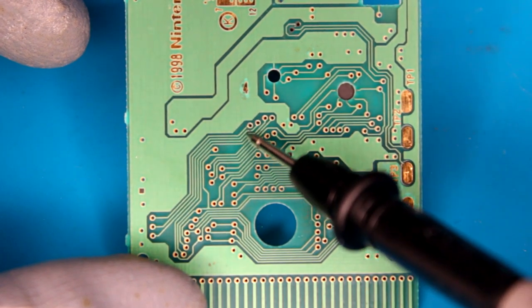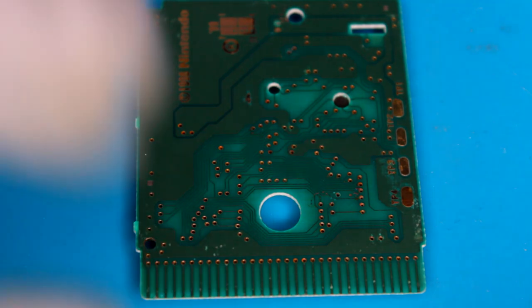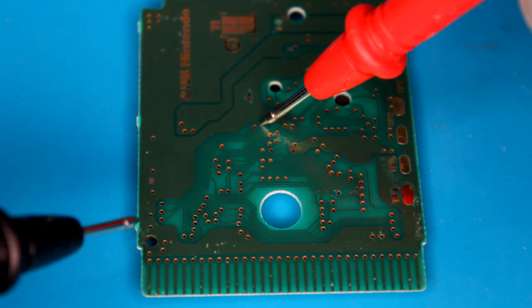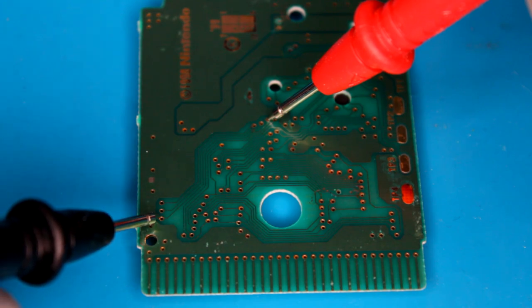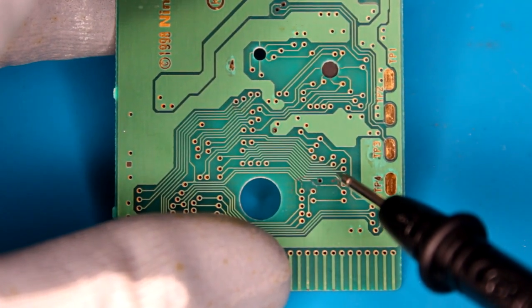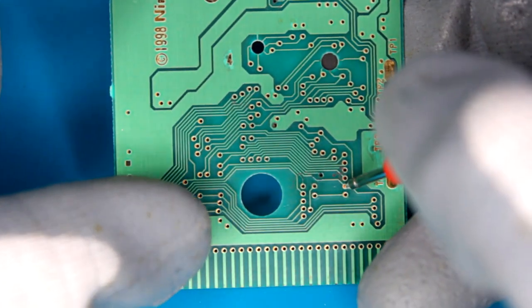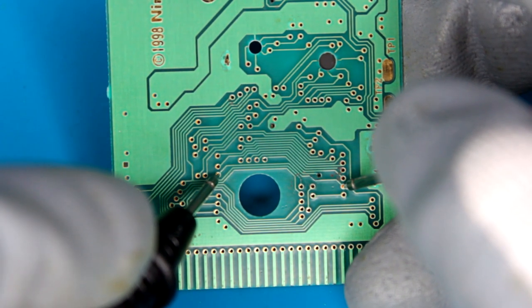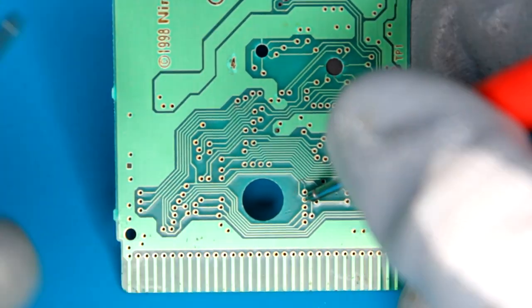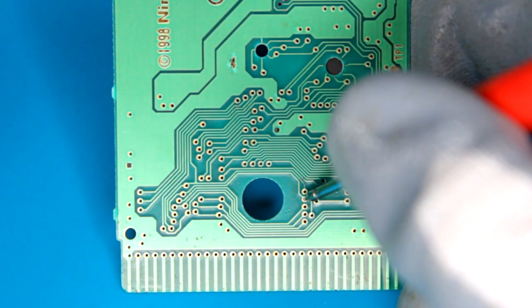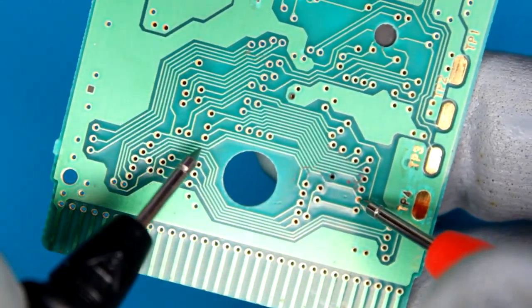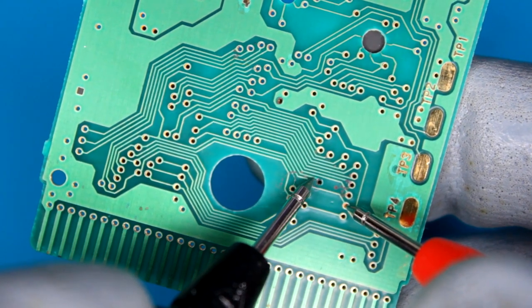Now to check the continuity of some of these other traces. These ones are quite easy, I can just check from via to via. If I get a buzz, then there's continuity. If I don't, then there's a break in the track. I can also use the same method for these ones down here. So I'm quite surprised about this one, because this one here looks really bad in person, but there's clearly continuity.